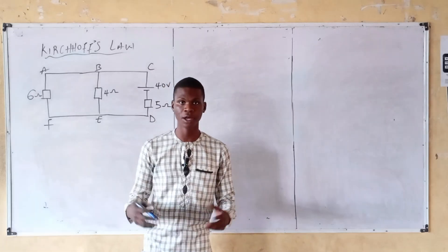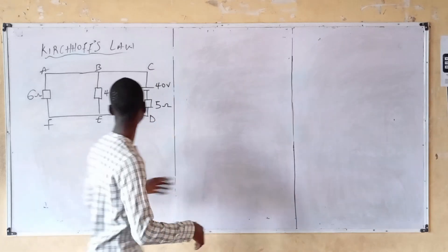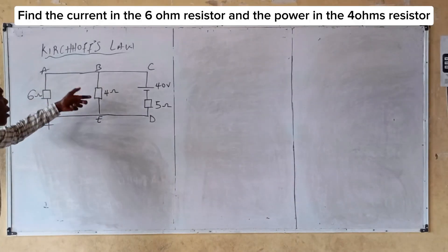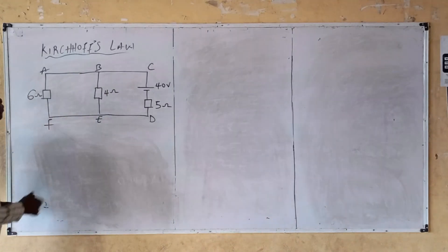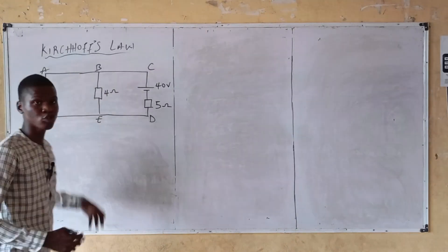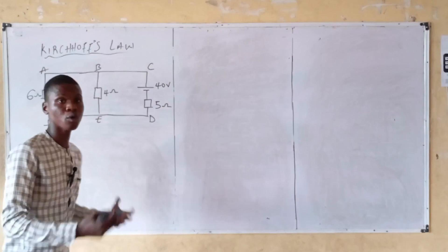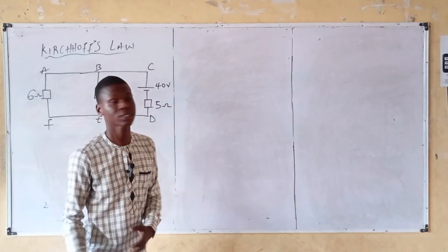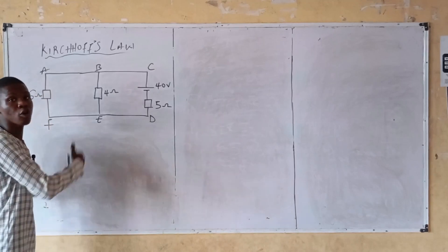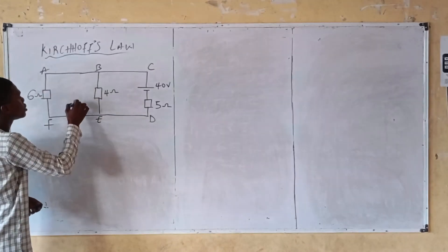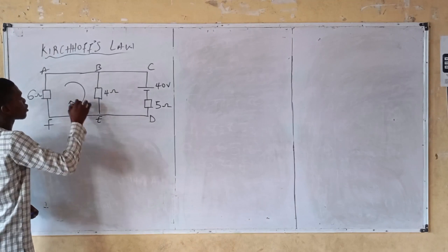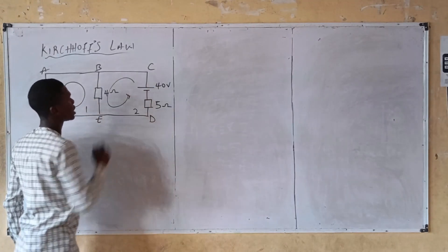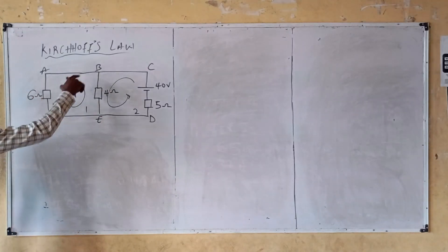Hello and welcome back to another video. The question says: find the current in the six ohm resistor and the power in the four ohm resistor. First thing first, assume your current direction — clockwise or anticlockwise. For this question I'll be using clockwise for loop one and anticlockwise for loop two.